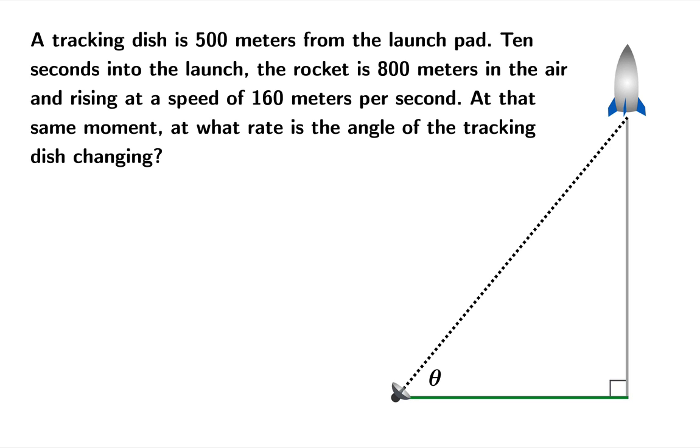Let's call that angle theta and give names to the sides of the triangle. We just saw the tip that we should substitute constant data if we can find it. And we know that the tracking dish is always going to be 500 meters from the launch pad. So let's replace that x with 500.